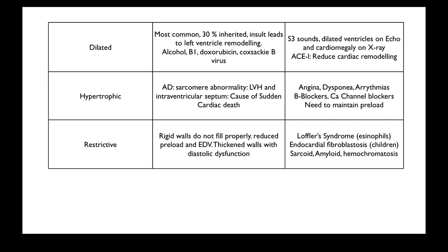Restrictive cardiomyopathies can be either primary or secondary. Primary includes Löffler syndrome or endocardial fibroelastosis, which are exceptionally rare. Löffler syndrome involves eosinophil infiltration in the myocardium, and endocardial fibroelastosis occurs in two-year-old children, causing a restrictive cardiomyopathy. As the name suggests, patients have rigid walls that do not fill properly, reducing preload and end-diastolic volume, leading to diastolic dysfunction. Diastolic dysfunction is dangerous because this is when the coronary vessels fill — when the heart is relaxed, the coronary vessels are more patent and fill from the aortic cusps. With diastolic dysfunction, there is less time for this, leading to myocardial ischemia.